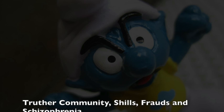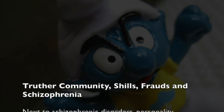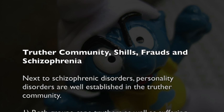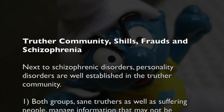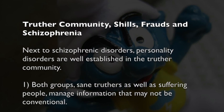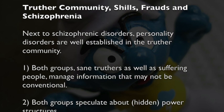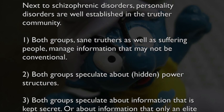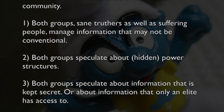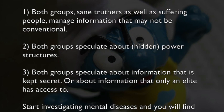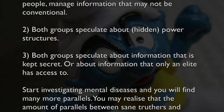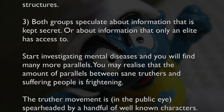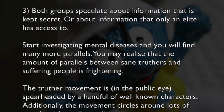Next to schizophrenic disorders, personality disorders are well established in the truther community. Both groups — sane truthers as well as suffering people — manage information that may not be conventional. Both groups speculate about hidden power structures, and about information that is kept secret or that only an elite has access to. Start investigating mental diseases and you will find many more parallels. The amount of parallels between sane truthers and suffering people is frightening.